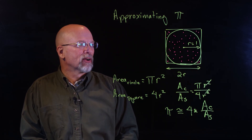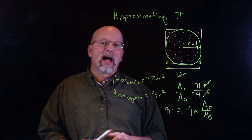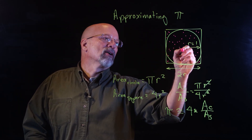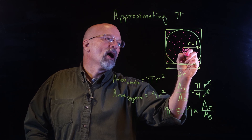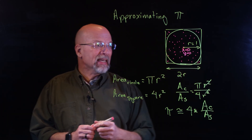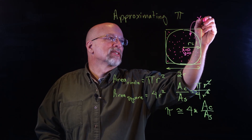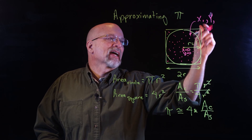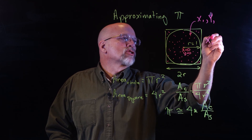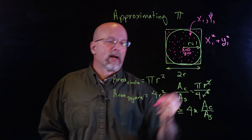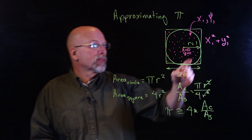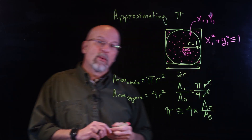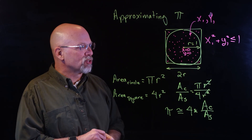It turns out this gives us a very good approximation of pi. How do you figure out if a point is inside of the circle? Well, if the origin is at x equals 0, y equals 0, then for any coordinate x1, y1, all I have to do is check if x1 squared plus y1 squared is less than or equal to one. That will tell me if the point is inside that circle.